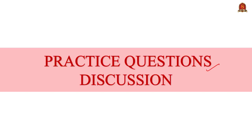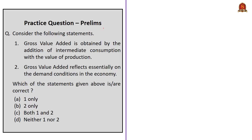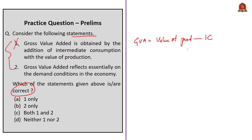The practice question based on today's economy article: Statement 1 — GVA is obtained by the addition of intermediate consumption with value of production — is incorrect, since GVA is obtained by subtracting intermediate consumption from value of production, i.e., output minus intermediate consumption, not addition. Statement 2 — GVA reflects essentially on the demand conditions in the economy — is also incorrect, since GVA reflects the supply side of the economy, not the demand side. The correct answer is option D, neither one nor two.